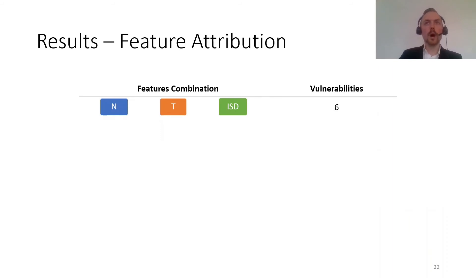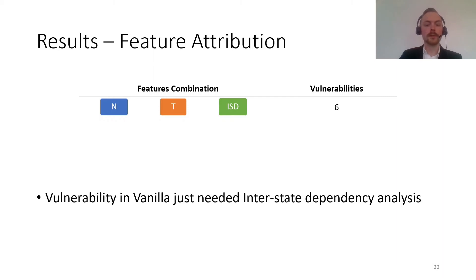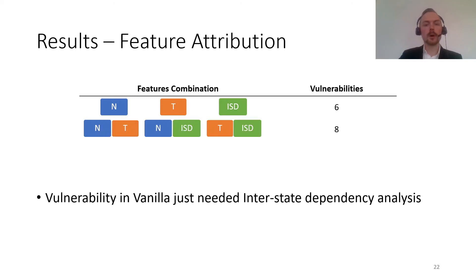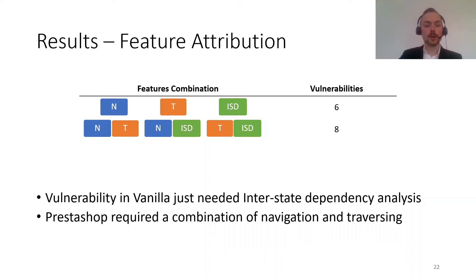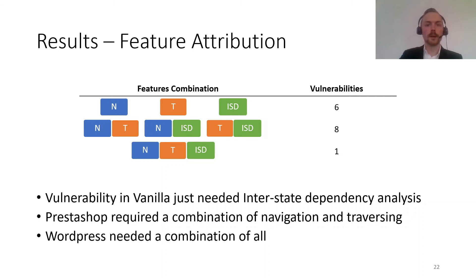To better understand why we are finding vulnerabilities, we do a feature attribution — looking at which feature (navigation, traversing, or interstate dependencies) was the main reason for finding each vulnerability. Six vulnerabilities that only Black Widow finds were due to being better at just a single feature. For example, with Vanilla, we only needed interstate dependency analysis. But the real power comes from combining multiple features: improving navigation and traversing, or navigation and interstate dependency, yielded eight more vulnerabilities — for example, PrestaShop required both navigation and traversing. There is also one case requiring all three features combined: WordPress. These vulnerabilities have been reported and are already fixed in HotCrab and PrestaShop.